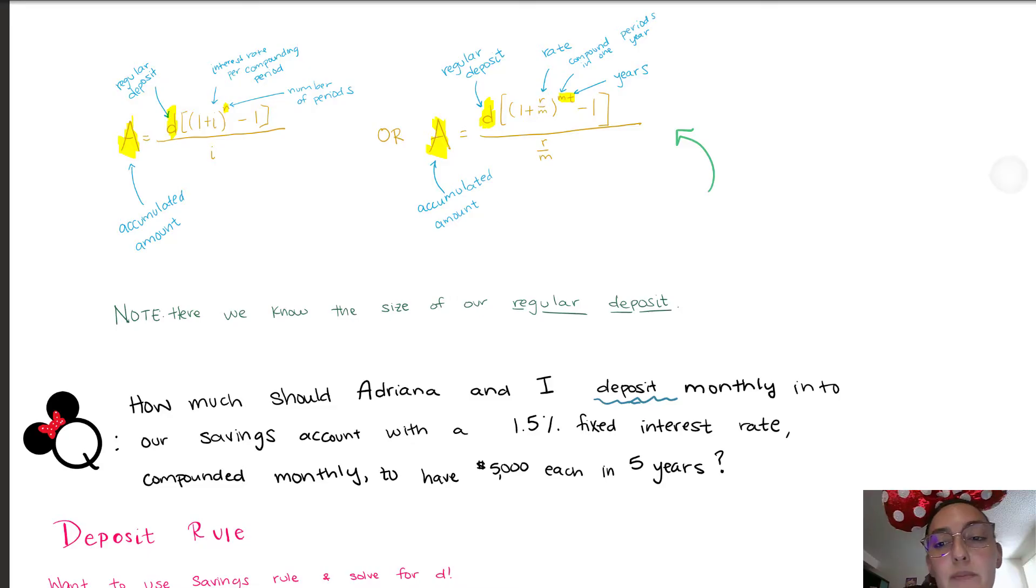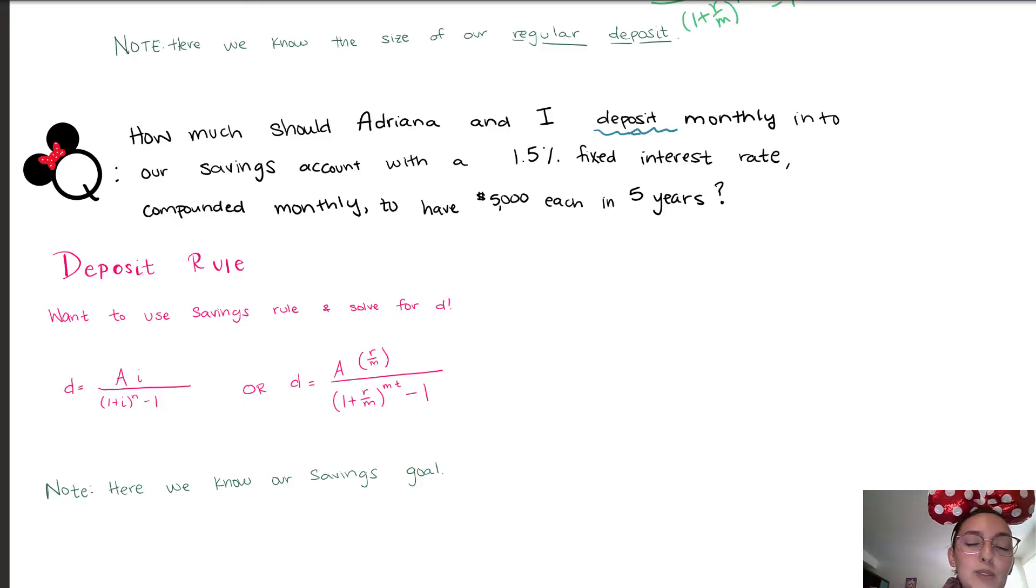If we multiply both sides of this rule by r over m divided by 1 plus r over m to the mt minus 1, again all the variables, the representations stay the same, but in this case we're solving for the deposit. So we know our goal, we know that we need to save five thousand dollars, so how much do we need to deposit so that we can save those five thousand dollars?